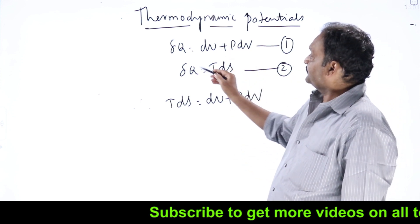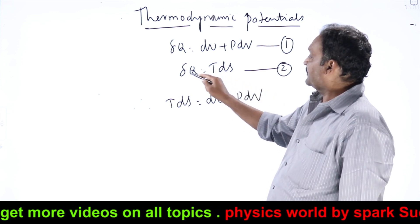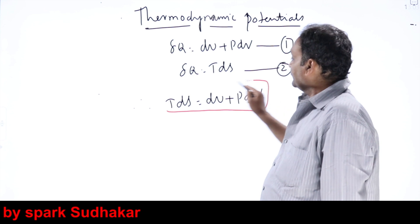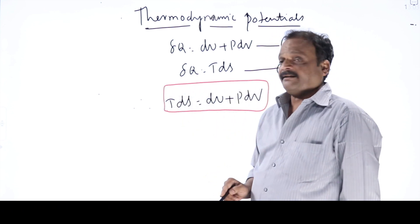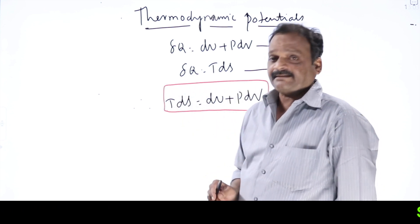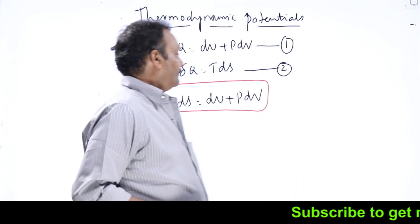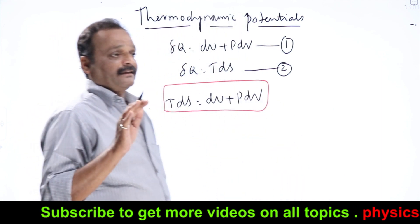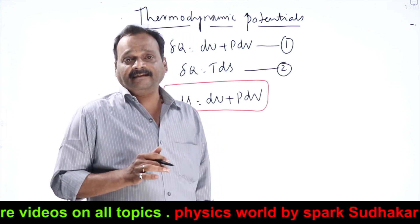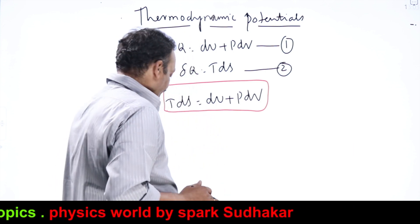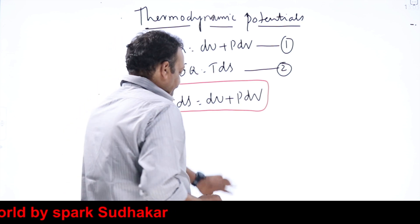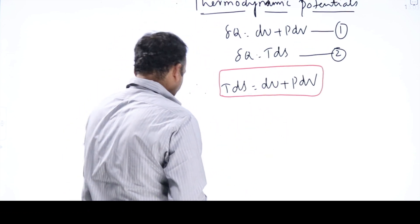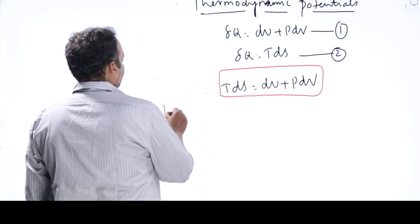Now I'll combine these two. Write T dS equal to dU plus P dV, because delta Q equals T dS. This is the combination of first and second law equations — combining both first and second laws of thermodynamics. Now I'll define four thermodynamic potentials, which are nothing but energy functions. The first one is internal energy.